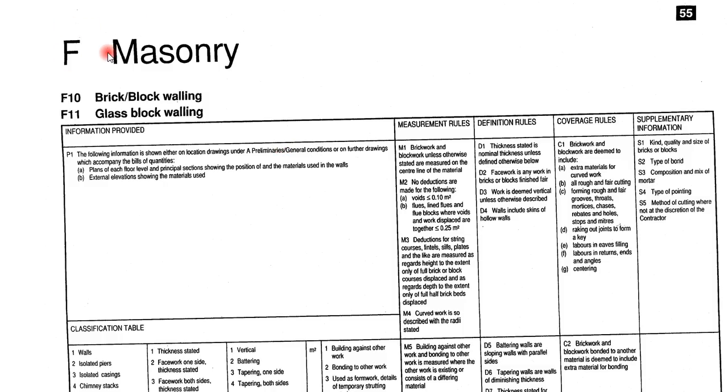Where you do not have experience and don't know how to describe whatever you're supposed to describe, you can do the taking off alongside with the SMM7. This page is an extract from SMM7, page 55, where you have masonry. Under masonry you have brickwork, block walling, and glass block walling. In the table you have what is supposed to be provided on the drawing, and then you have the measurement rules, definition rules, coverage rules, and supplementary rules.